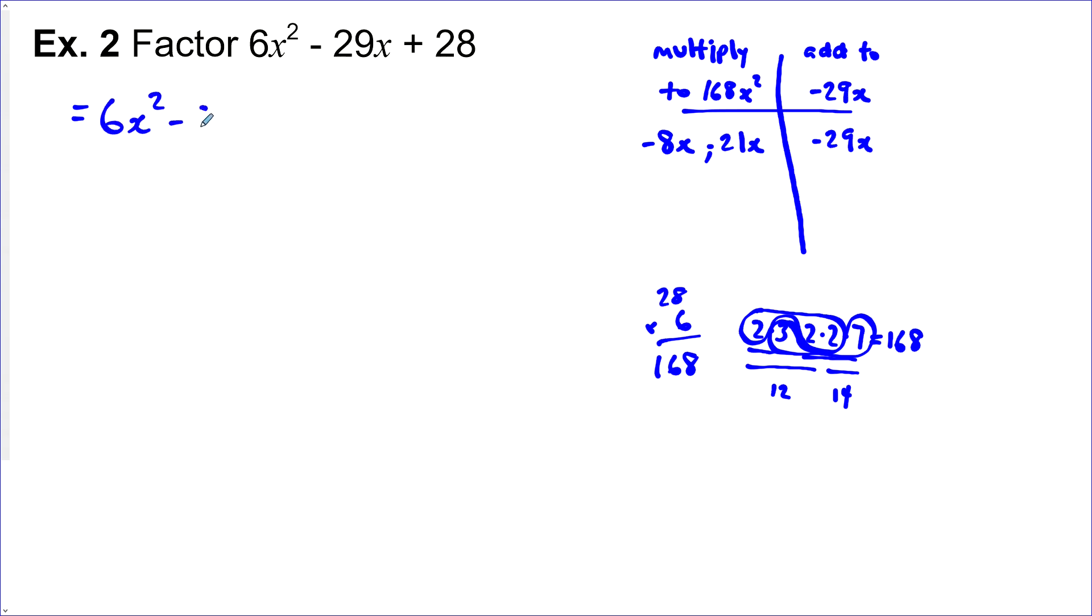6x² minus 8x minus 21x plus 28. Next step, what's common between these first two terms? And what's common between these last two terms? Common between the first two looks like 2x. Let's write what's left after we factor 2x from 6x². 3x. What's left from here? Negative 4.